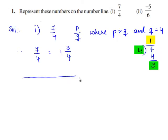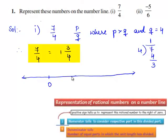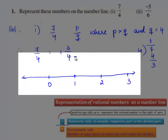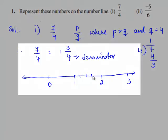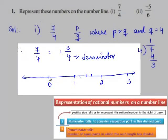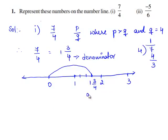Now, let us take the number line. Since the given rational number is a positive rational number, it lies on the right side of 0 in the number line. On the number line, we represent 0, 1, 2, and 3. The mixed fraction is 1 and 3 by 4. Let us take one full unit and then divide 1 to 2 into 4 equal parts, because the denominator is 4. Therefore, 1 and 3 by 4 is 1 full unit and the third division in 1 to 2. This represents 1 and 3 by 4, or 7 by 4.